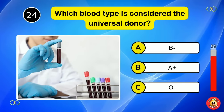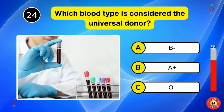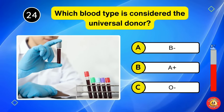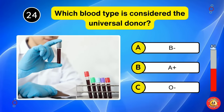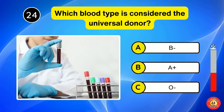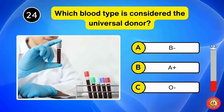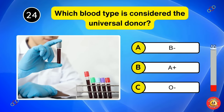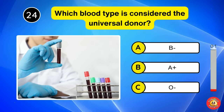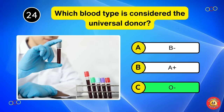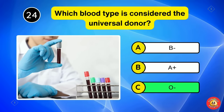Which blood type is considered the universal donor? O negative.